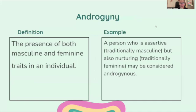Androgyny: the presence of both masculine and feminine traits in an individual. For example, a person who is assertive — traditionally masculine — but also nurturing — traditionally feminine — may be considered androgynous.